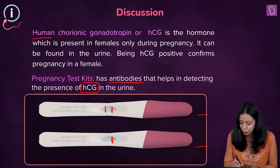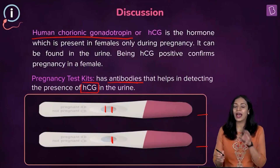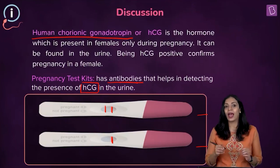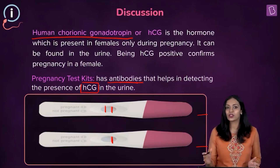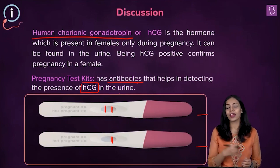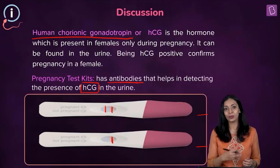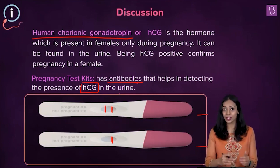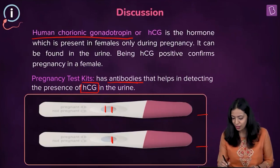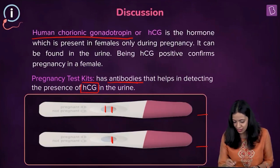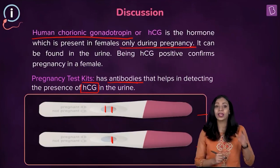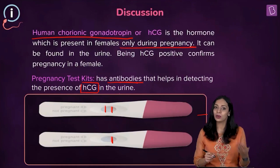HCG stands for human chorionic gonadotropin and this hormone is found only in pregnant women. During early pregnancy, some of this HCG hormone is present in the urine as well, and that is what is used to detect if the woman is pregnant or not. HCG is found in the urine and being HCG positive — two pink lines in the kit — confirms pregnancy.